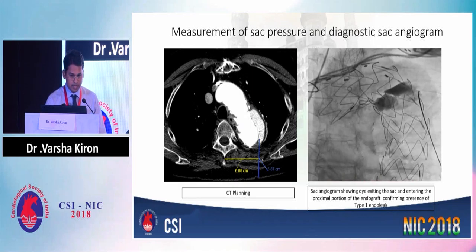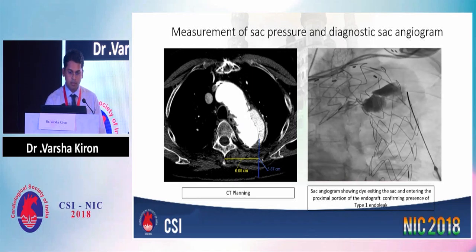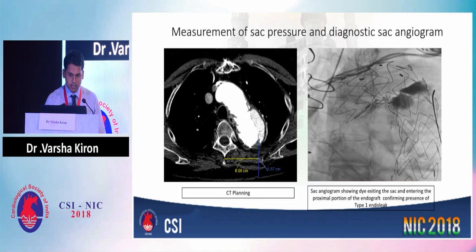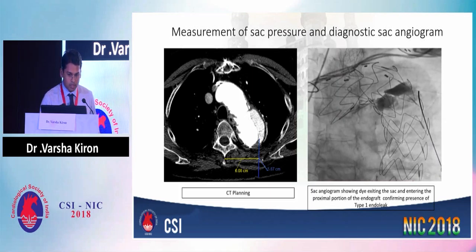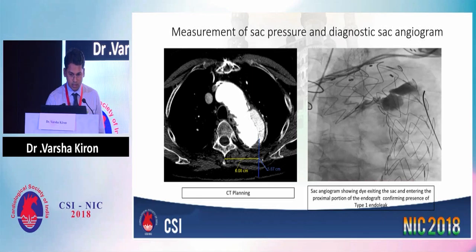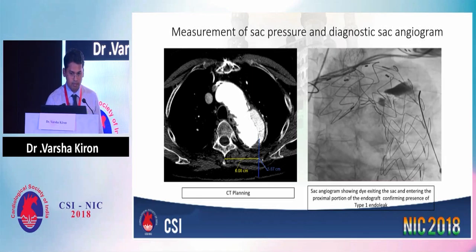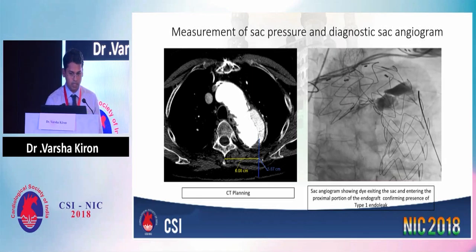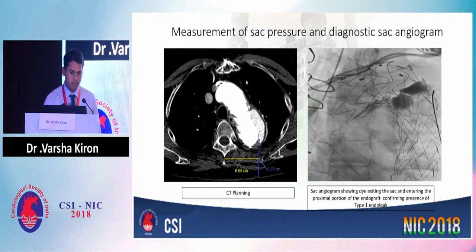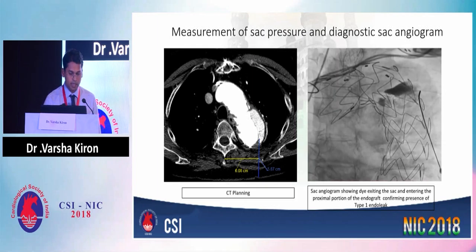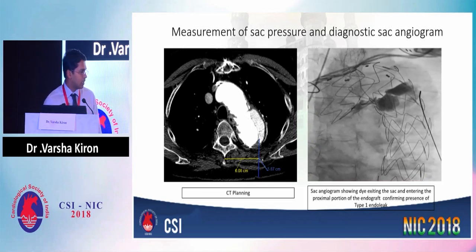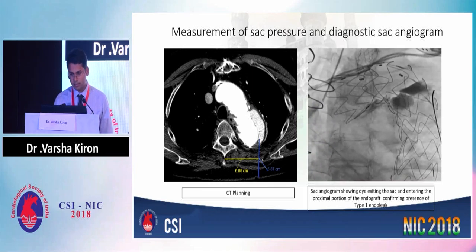The pulse pressure and the absolute pressure are reasonably high, suggesting more of a type 1 endoleak rather than a type 2 endoleak, which would show much lesser pressure and would not be pulsatile. This is the CT planning based on which we entered the sac. This is the sac angiogram — you could see dye exiting under the proximal portion of the graft and entering the aorta, and also visualization of the staining of the thrombus within the sac. This confirmed the presence of a type 1 endoleak rather than a type 2.